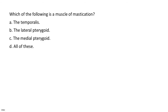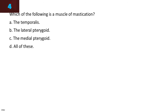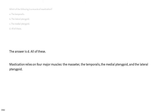Which of the following is a muscle of mastication? A. The temporalis. B. The lateral pterygoid. C. The medial pterygoid. D. All of these. The answer is D, all of these. Mastication relies on four major muscles: the masseter, the temporalis, the medial pterygoid, and the lateral pterygoid.